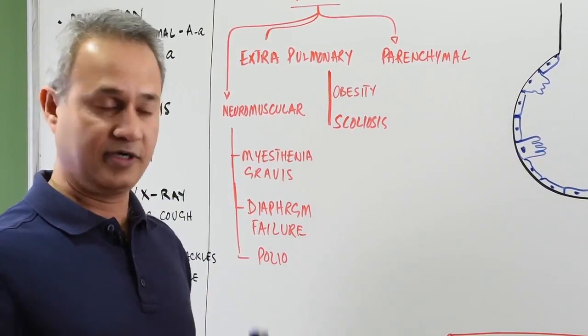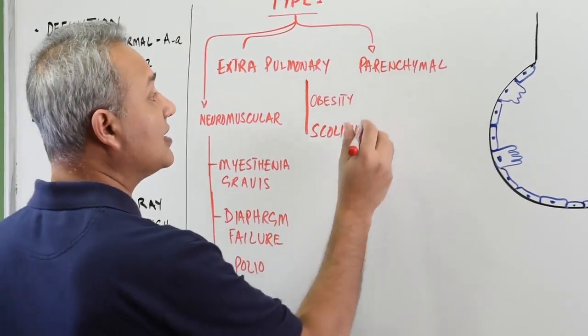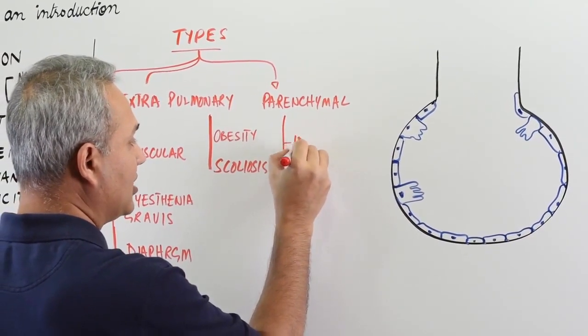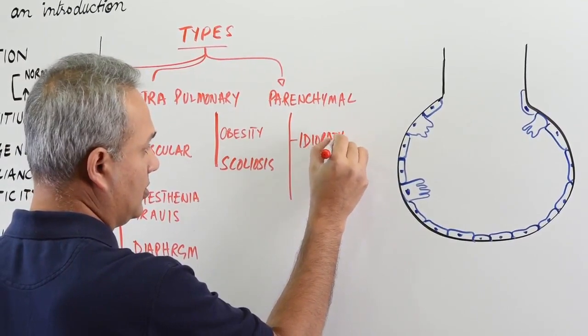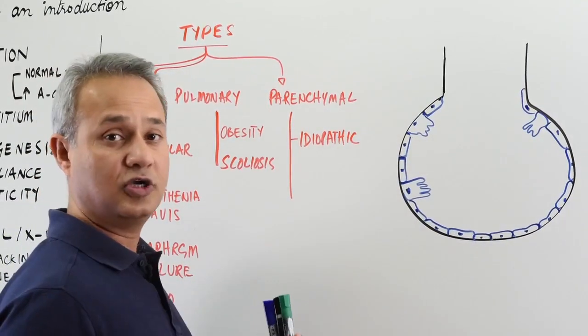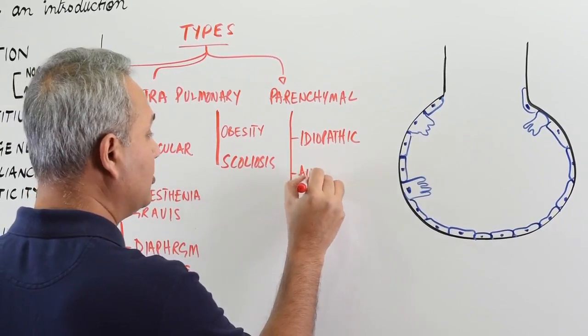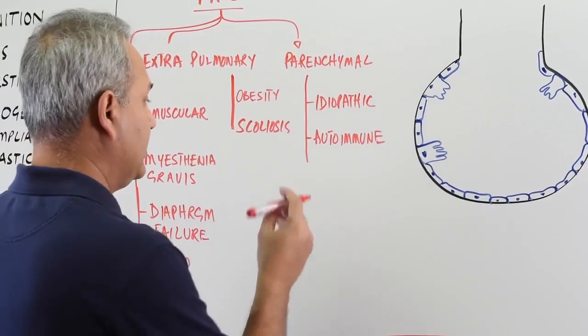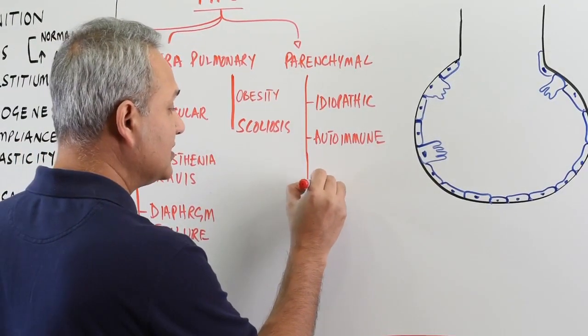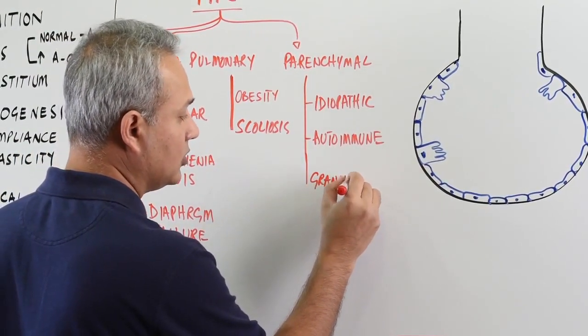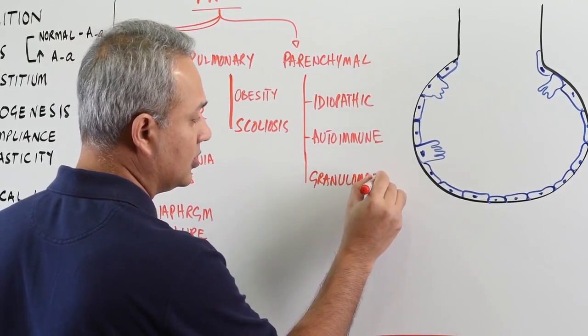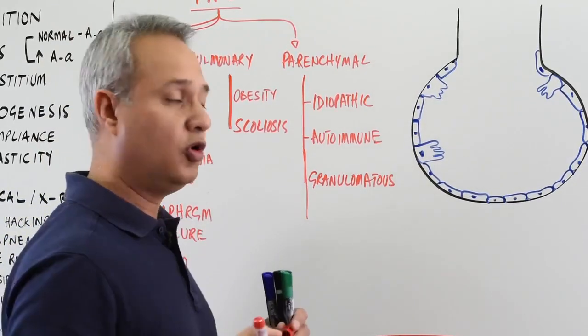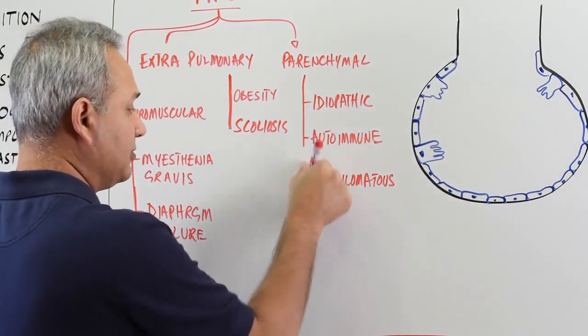So, these are the ones where the muscles are not working. And then the parenchymal diseases can be idiopathic - we do not know what is happening. These can be autoimmune, granulomatous diseases. For example, Wegener's granulomatosis or sarcoidosis.